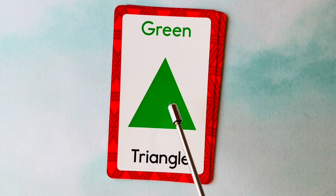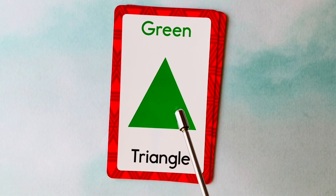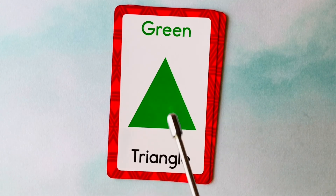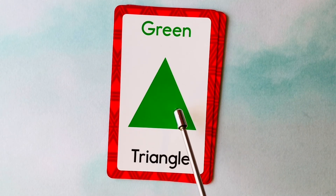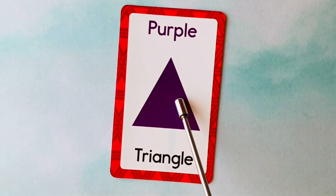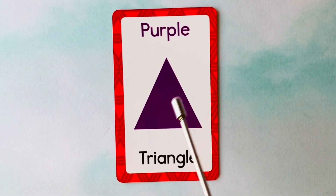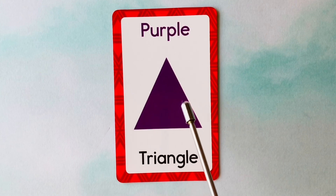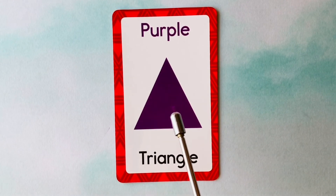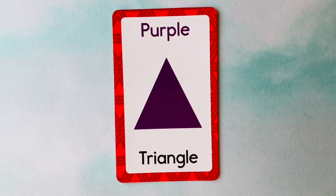This is a triangle. What color is this triangle? It's a green triangle. This is also a triangle. What color is this triangle? It's a purple triangle. This is a brown triangle. This is a black triangle. This is a blue triangle. Fantastic job!